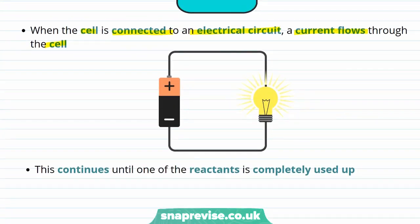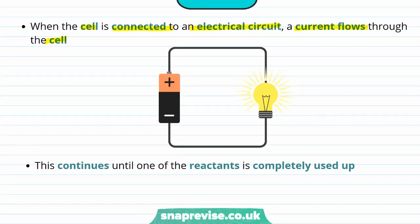If we add a component to our electrical circuit — for example a bulb as shown in this diagram — the current can provide electrical energy to this component, meaning we can use the cell and the chemical reactions within it to power the bulb. A current will flow through the circuit until one of the reactants within the cell is completely used up. We will observe this as the battery going dead, as the chemical reactions that produce electricity will stop.